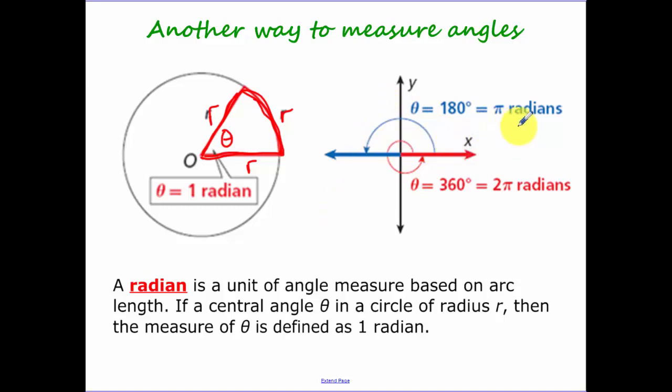Now halfway around our circle, 180 degrees, is pi radians. One rotation around our circle, 360, is equal to 2 pi radians. So 180 degrees equals pi radians. That's going to be our conversion.